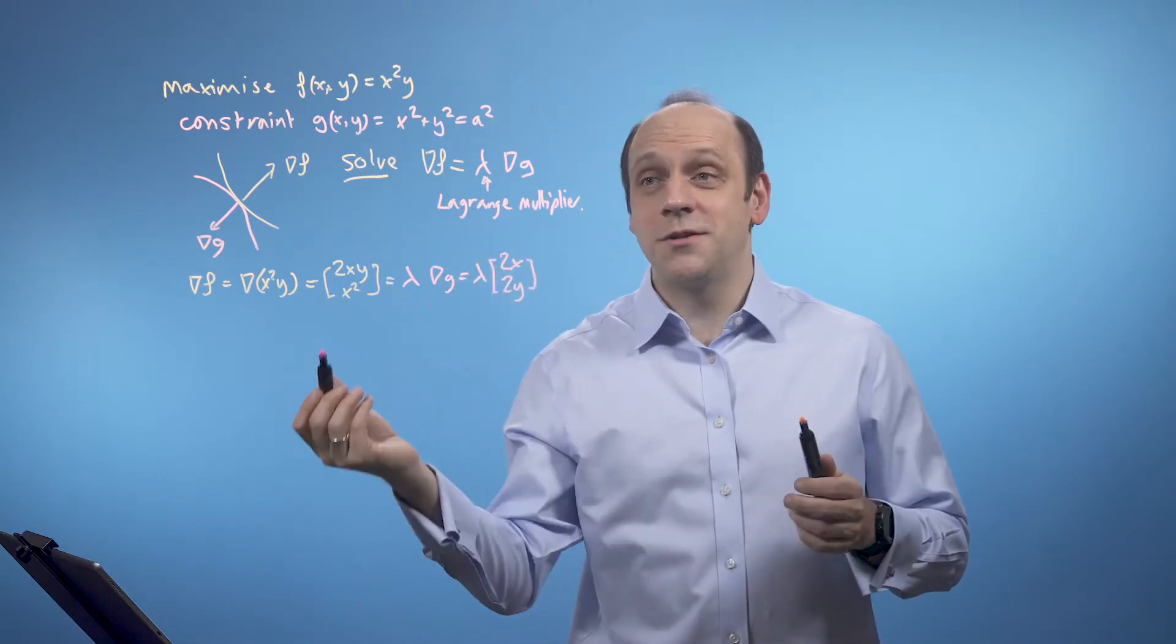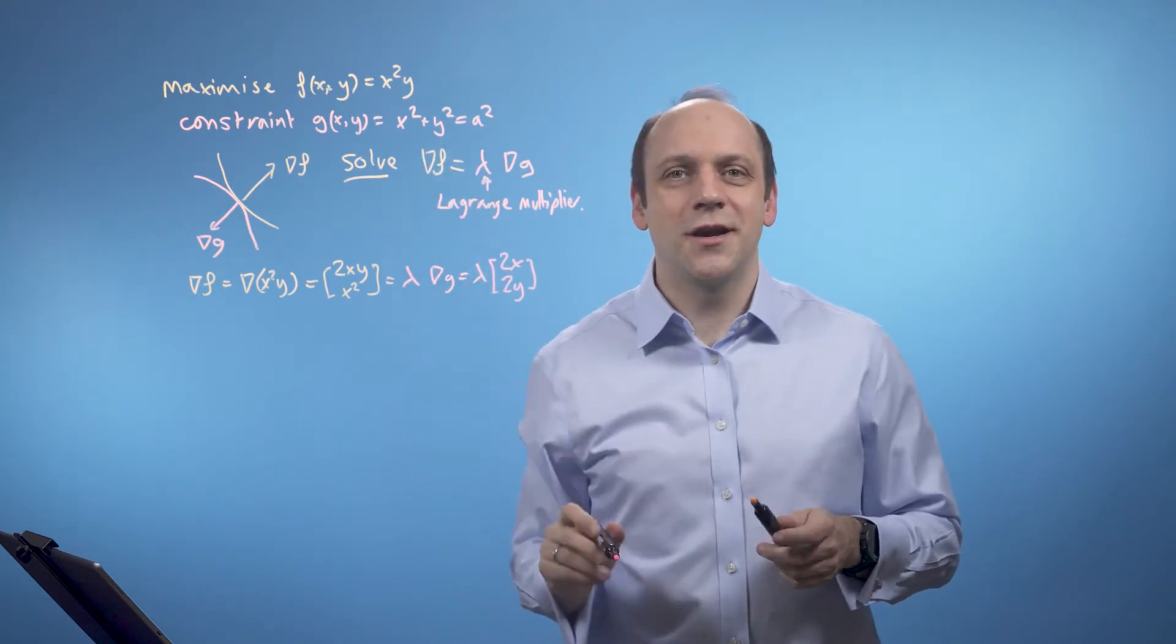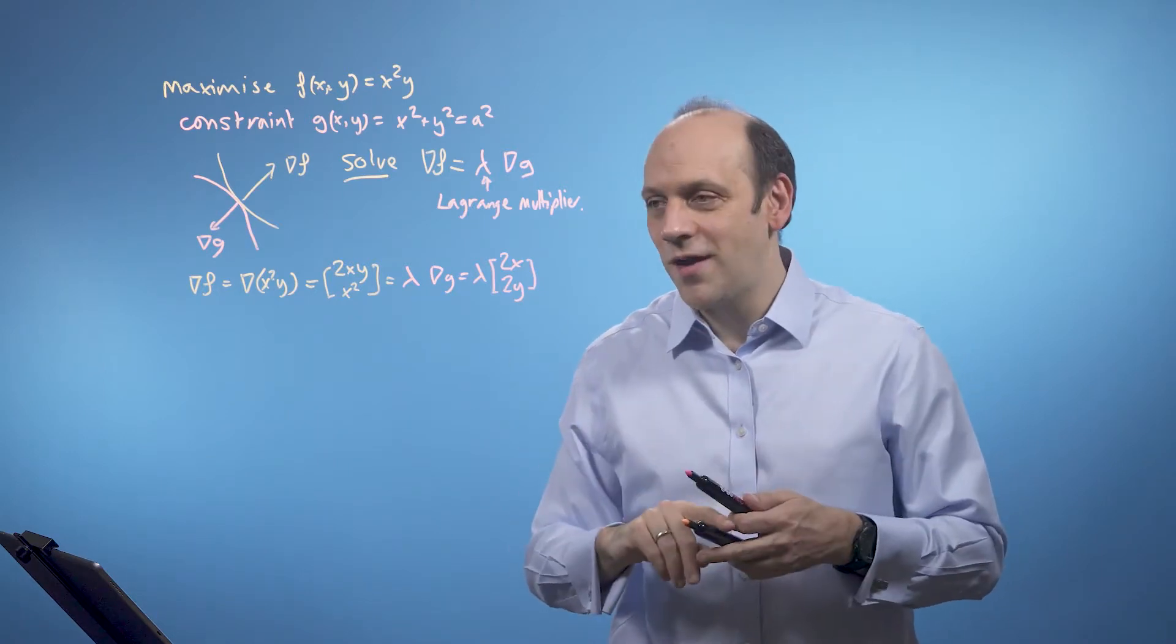And that's giving me two equations with two unknowns. And I've got a third equation, which is the constraint equation itself that brings in the actual value of the circle I'm particularly interested in. So I've just got to solve that.